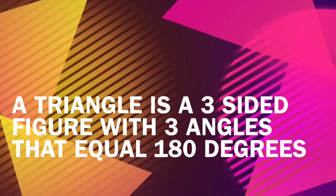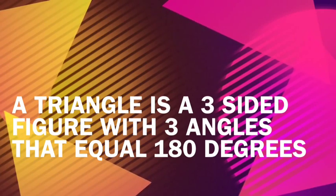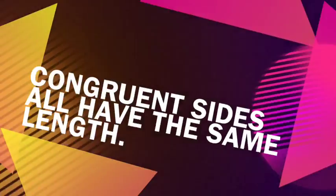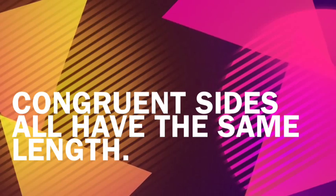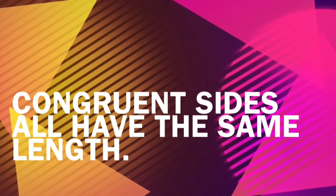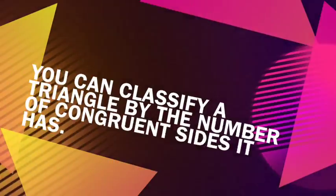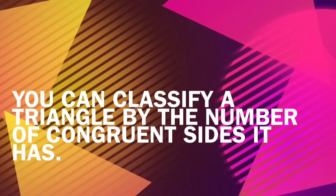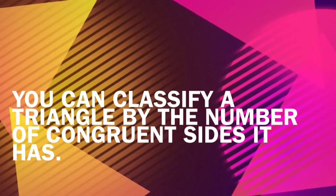A triangle is a three-sided figure with three angles that equal 180 degrees. Congruent sides all have the same exact length. We classify triangles by the number of congruent sides they have.